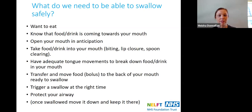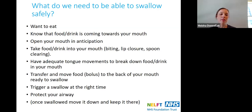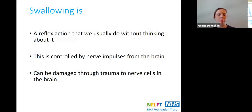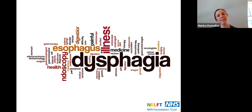For the swallow to be safe it needs to be triggered at the right time — if it's too slow the food might go into the airways, what we call aspiration. We need to protect the airway, and once swallowed we need to keep it there, avoiding reflux or vomiting. In summary, swallowing is a reflex action we usually do without thinking about it, controlled by nerve impulses from the brain, and it can be damaged through trauma to nerve cells — particularly in stroke patients.